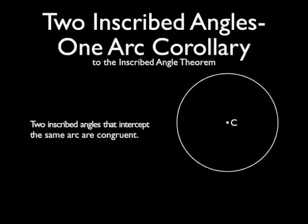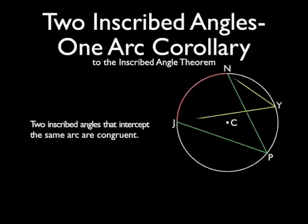That says that if two inscribed angles intercept the same arc, then they're going to be congruent. So here we have angle P intercepting arc JN and angle Y also intercepting arc JN. That means that angle P and angle Y are congruent.